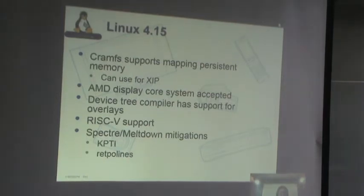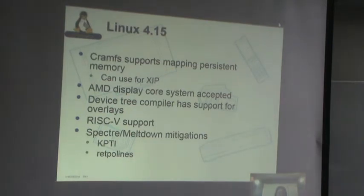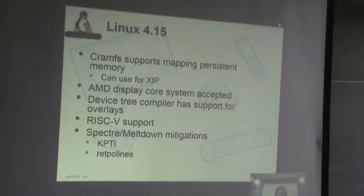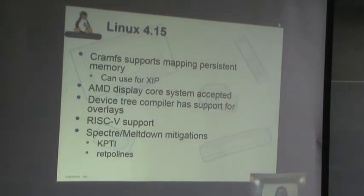In 4.15, getting into the fall of last year, we had CramFS support for mapping persistent memory, which is really good — you could use persistent memory underneath CramFS. CramFS is a version of RAMFS, a memory-based file system, but by allowing it to map onto persistent memory, you could use it for XIP or other types where files are stored in a persistent fashion. The AMDV display core system was accepted — a very big GPU driver that got accepted into the mainline kernel.